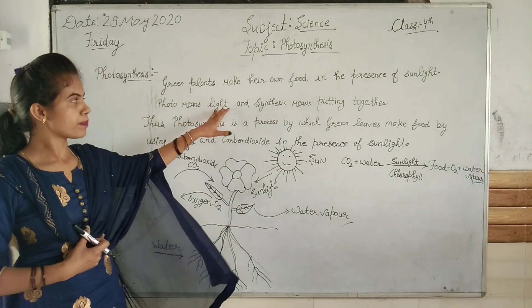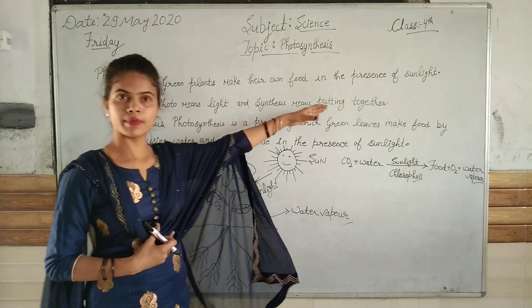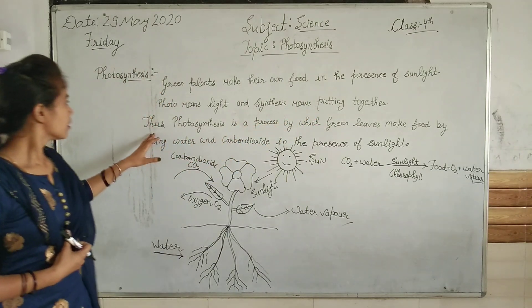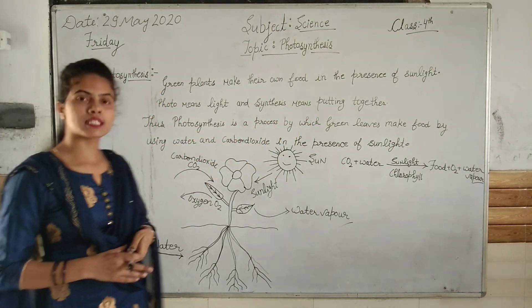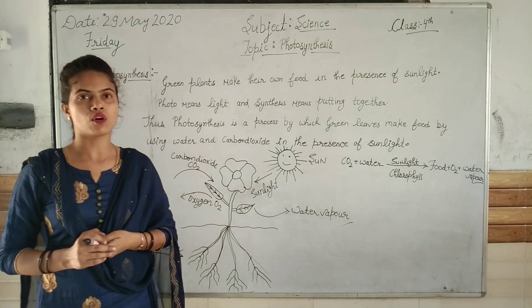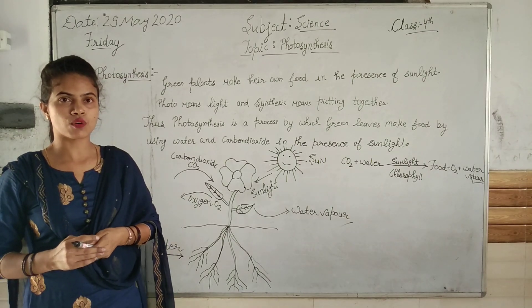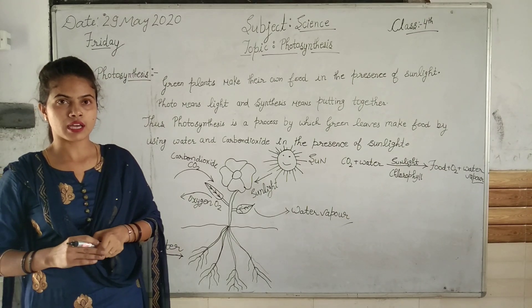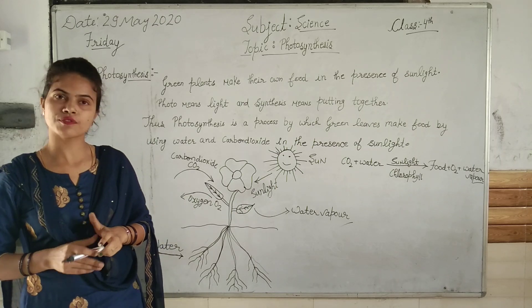Photo means light, and synthesis means joining together. Thus, photosynthesis is a process by which green leaves make their own food in the presence of water, carbon dioxide, and sunlight.